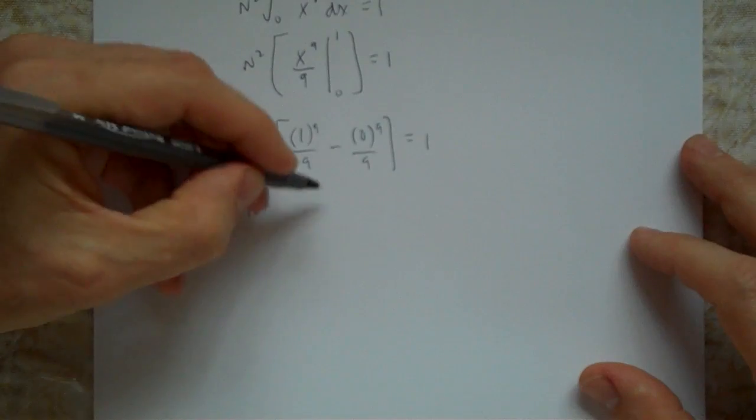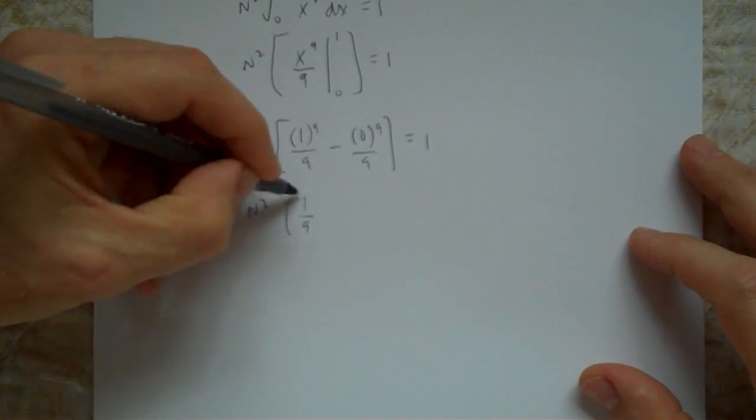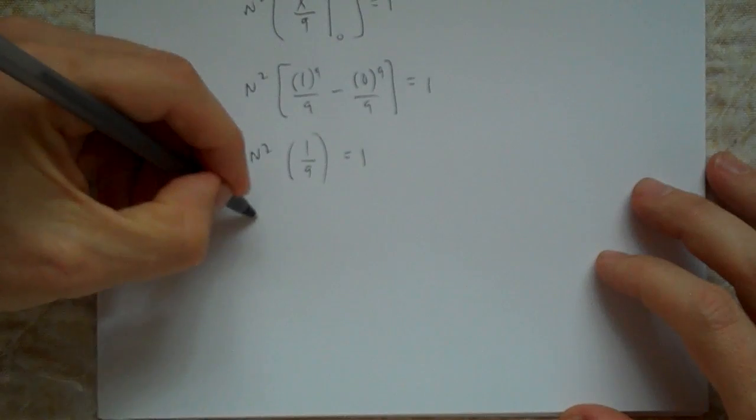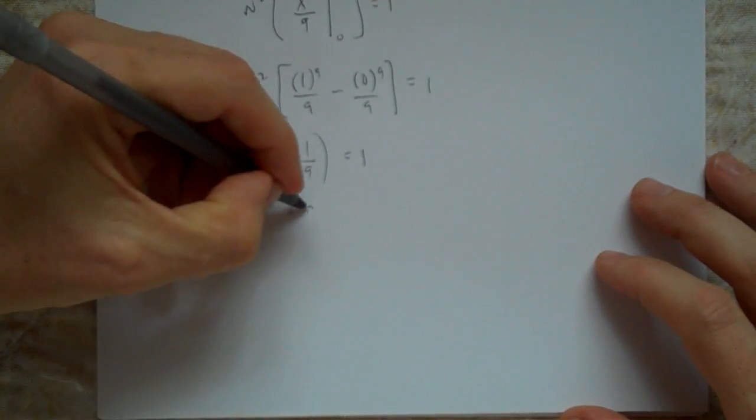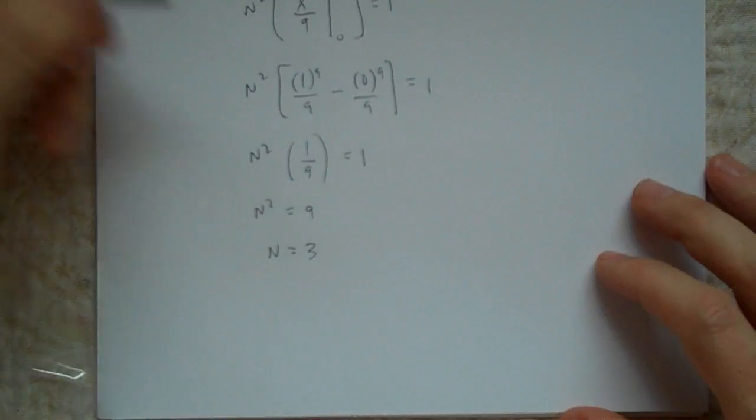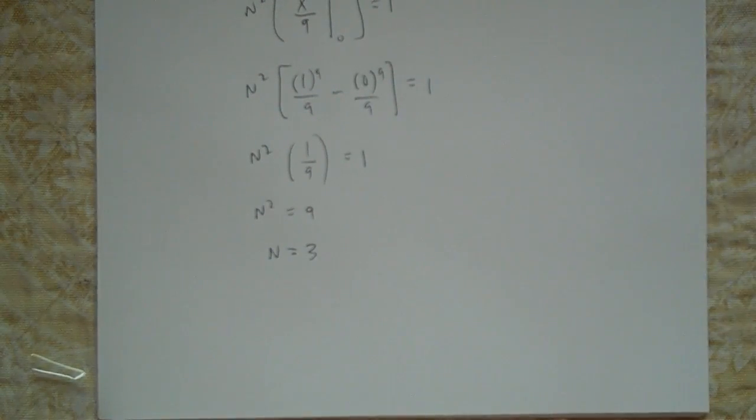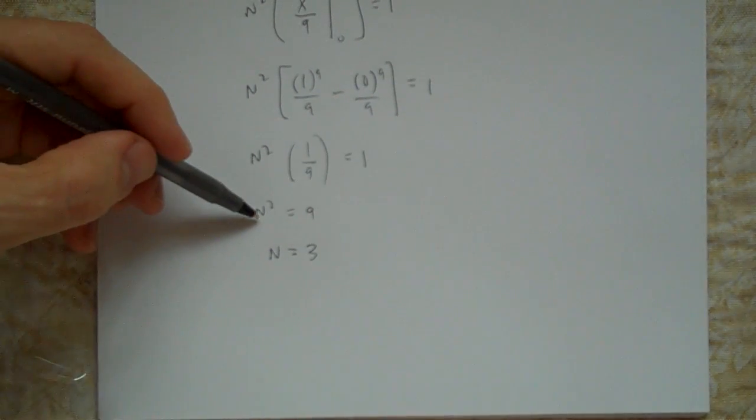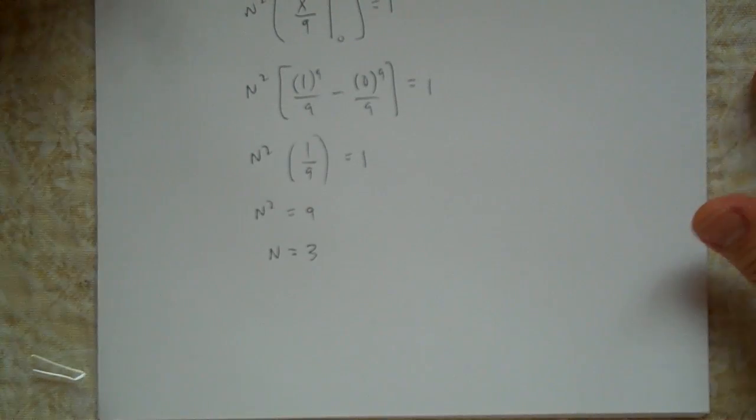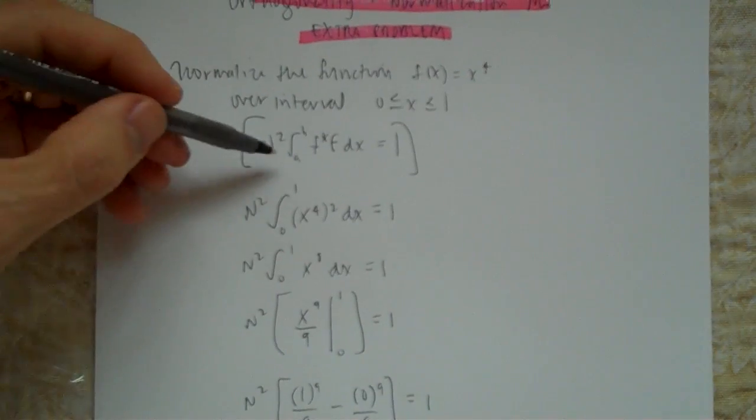So n squared times 1/9 equals 1, which means n squared equals 9, so n equals plus or minus 3. It's 3. We're looking for a normalization factor. When I say plus or minus 3, I'm sorry, that was an old habit of just finding a square root of a number. But we're really looking for a normalization factor.